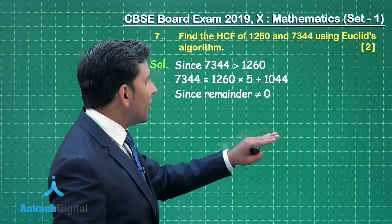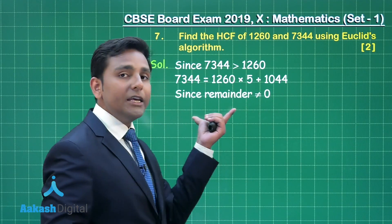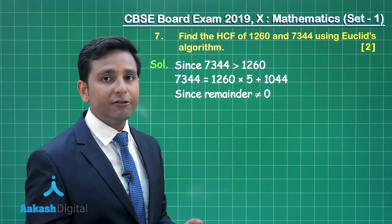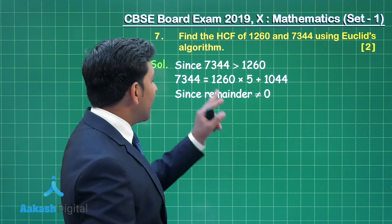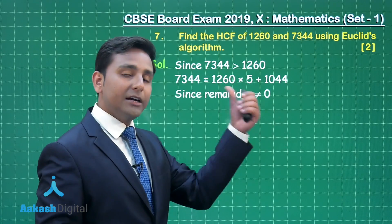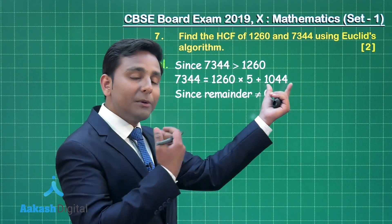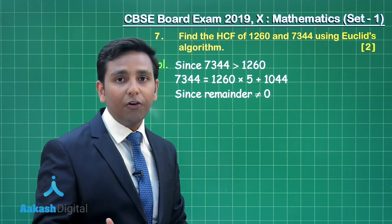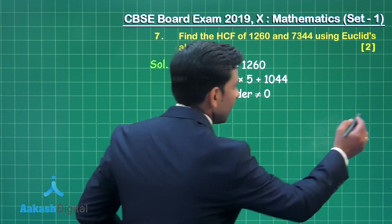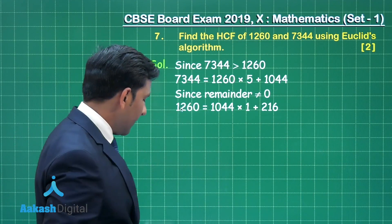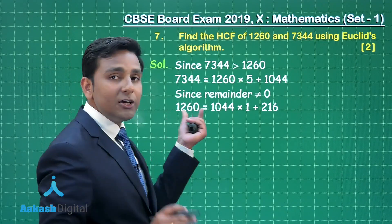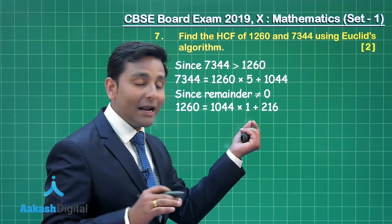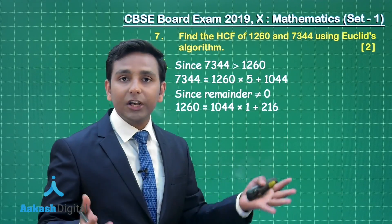The remainder is not equal to 0, so we proceed to the next step and apply Euclid's division lemma again, this time taking 1260 as dividend and 1044 as divisor. When we divide 1260 by 1044, we obtain quotient 1 and remainder 216 — again not equal to 0.